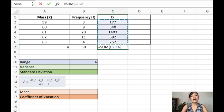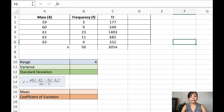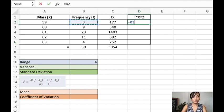Next, I will solve for f multiplied to x raised to 2. That is the frequency multiplied to the mass squared. To solve that, I will use frequency multiplied to x raised to 2. I will click enter, then I'll have these values and drag it down. And I will sum it.